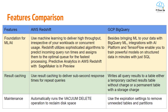On ML and AI foundations: AWS Redshift uses machine learning to optimize performance, and predictive analytics with AWS SageMaker was in preview at the time of this video. GCP BigQuery, beyond BigQuery ML, also integrates with AI Platform and TensorFlow, enabling you to train powerful models on structured data in minutes using just SQL. On result caching: AWS Redshift uses result caching for sub-second response times on repeated queries, while GCP BigQuery writes all query results to a table — either a temporary cached table at no charge or a permanent table with a storage charge.